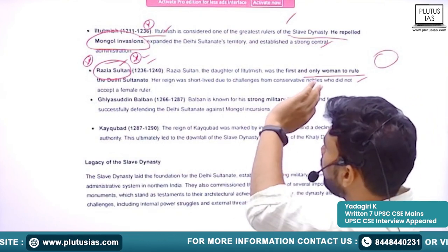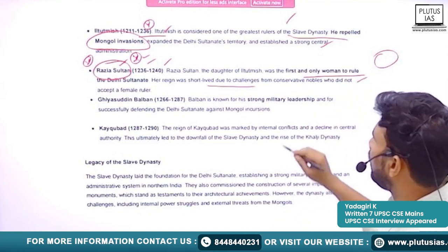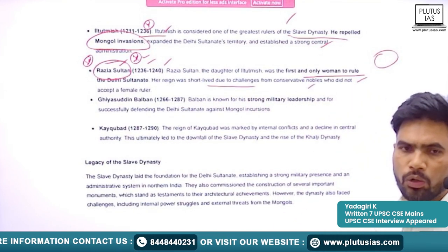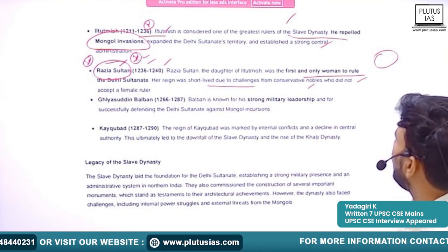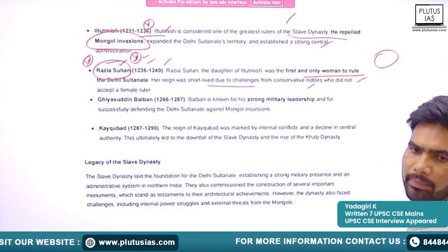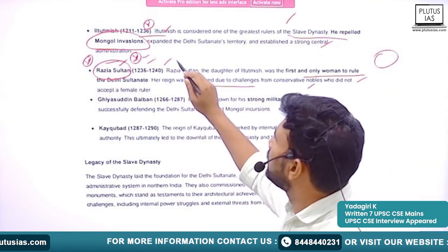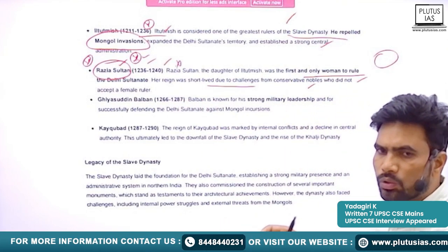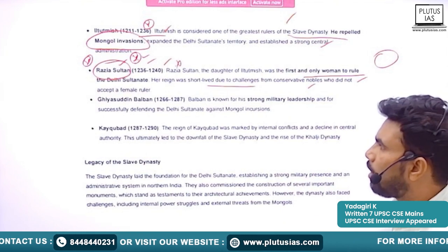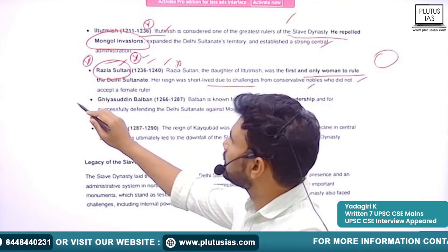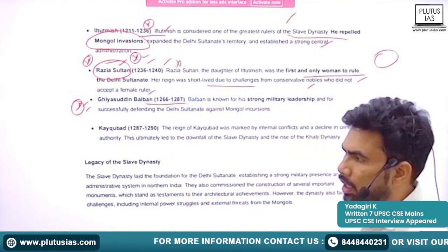She was the first and only woman to rule the Delhi Sultanate. However, her rule was very short-lived due to conservative nobles. The nobles never accepted the rule of Razia Sultana. Because of that reason, she was murdered and her rule was ended. After that came the strongest ruler in the Slave Dynasty, that is Giyazuddin Balban.